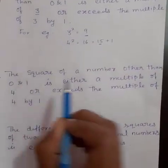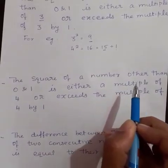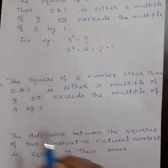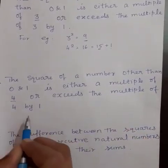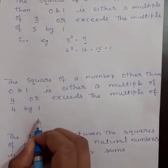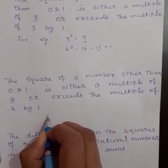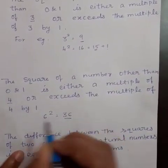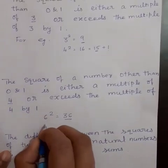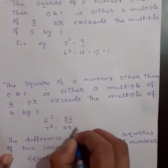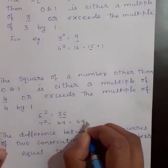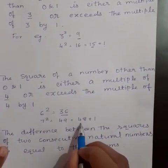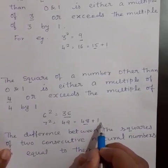Next, the square of a number other than 0 and 1 is either a multiple of 4 or exceeds the multiple of 4 by 1. For example, 6 square is equal to 36. We know that 36 is the multiple of 4. 7 square is equal to 49. 49 is equal to 48 plus 1. That is, 49 exceeds the multiple of 4, that is 48, by 1.